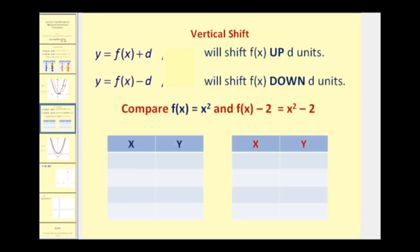Now let's talk about a vertical shift. y equals f of x plus d will shift f of x up d units, and y equals f of x minus d will shift f of x down d units. This translation probably seems more logical: since f of x equals y, adding d units to y shifts the function up, and subtracting d units shifts it down. Let's do a comparison using f of x and f of x minus 2.